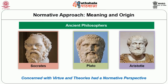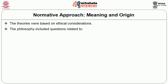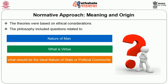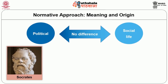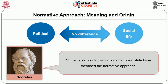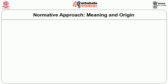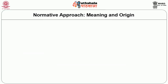The theories were based on ethical considerations. The philosophical bent included questions related to the nature of man, what is virtue, what should be the ideal nature of the state or political community, whether man is good or not. There was also no difference between political and social life. Socrates' emphasis on virtue through to Plato's utopian notion of an ideal state theorized the normative approach. The turmoil in Greek society made these philosophers think and speculate an ideal order of state.